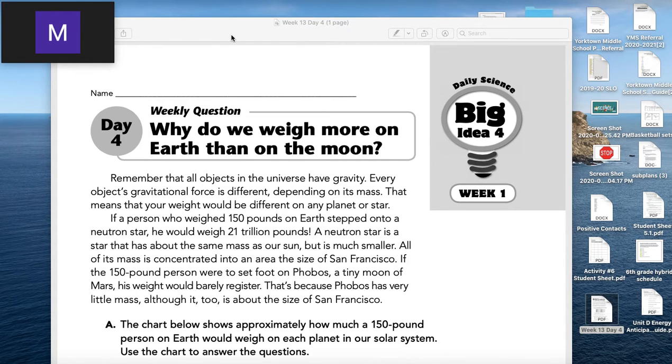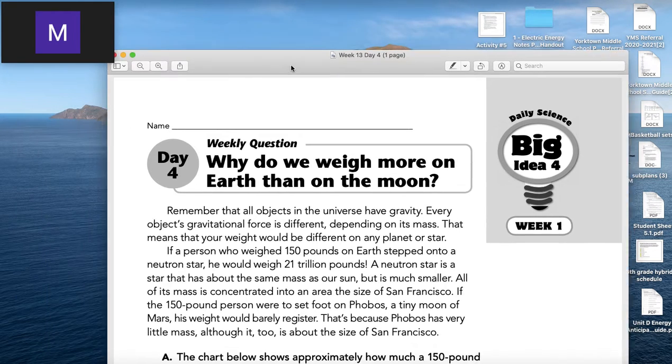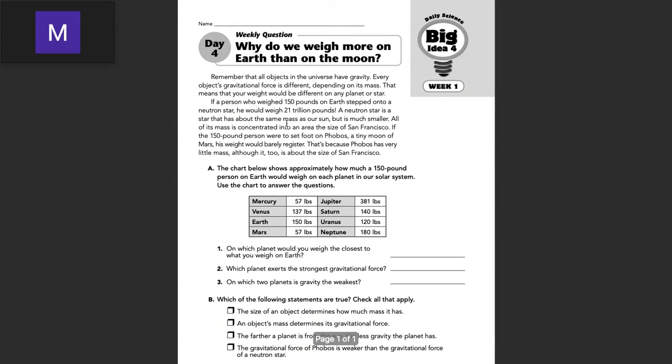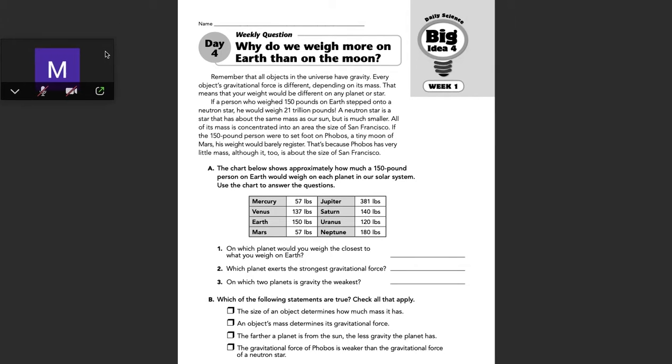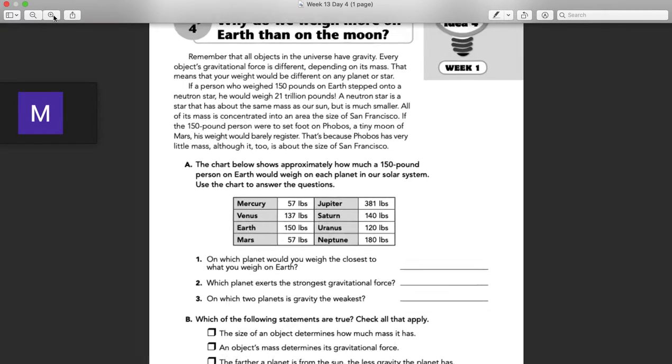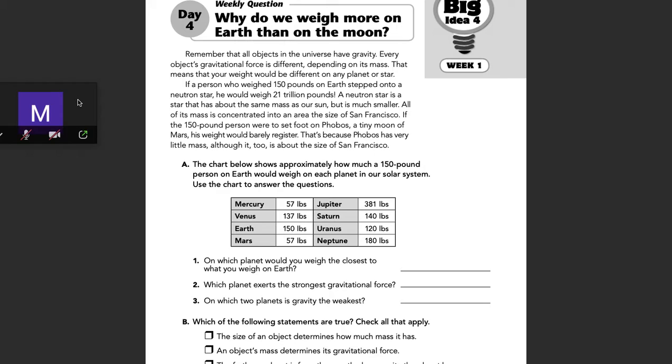I'm going to go ahead and talk about Bellwork Week 13, Day 4 here. Again, this is talking about how all objects in the universe have gravity, but every object's gravitational force is different depending upon its mass.